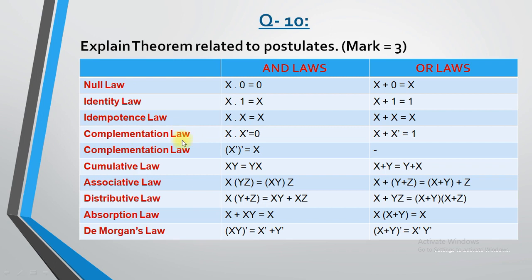Next is the complementation law. There are two types. Law 1: x dot x-dash. If the value of variable x is 0, then x-dash is 1, so 0 multiplied by 1 returns 0. Similarly x plus x-dash: 0 plus 1 returns 1. These are postulates which you need to memorize — this is the most important concept. In future, equations are based on these postulates and we will simplify boolean functions using them. If you do not remember the postulates, you will not be able to simplify boolean functions.